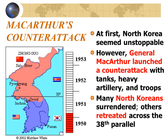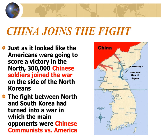All in all, close to 3 million Koreans died as a result of the conflict between North and South Korea. The conflict took a decisive turn when China entered the fight. Just as it appeared the Americans were going to win in the North, 300,000 Chinese soldiers joined the war on the side of the North Koreans, turning the fight into a war between Chinese communists and the United States.